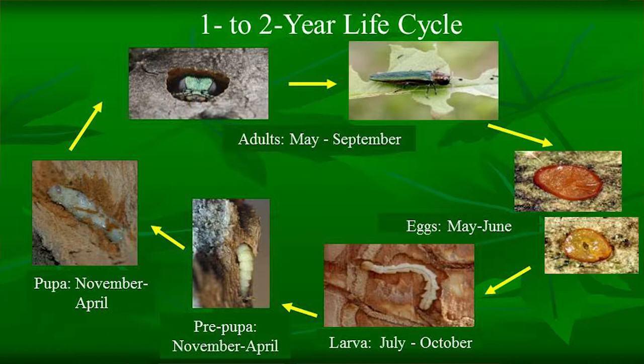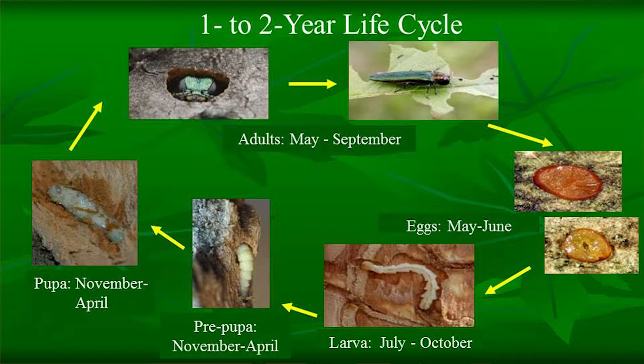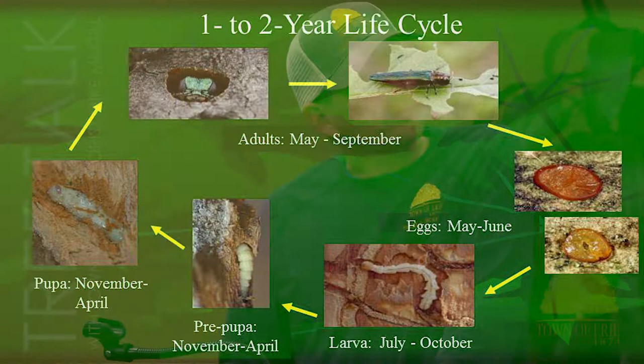Briefly on the life cycle: adults emerge May through September, fly out of the tree and start eating leaves — that's when you'll actually see them. In May and June they're laying eggs on the bark, hatching in July through October and burrowing into the tree. Through November to April the larvae grow larger and pupate, and the cycle begins again. Even in known infested areas, there aren't many adults visible on leaves — it's very hard to detect.